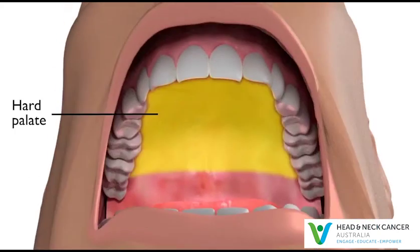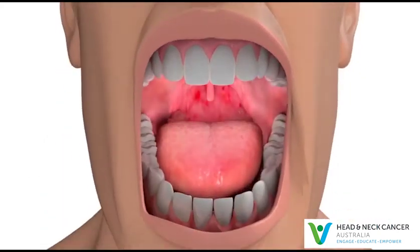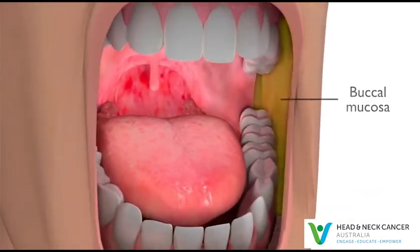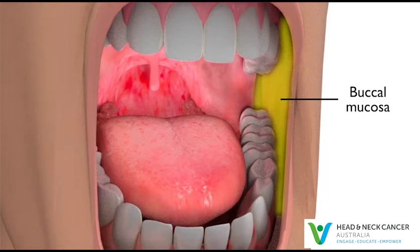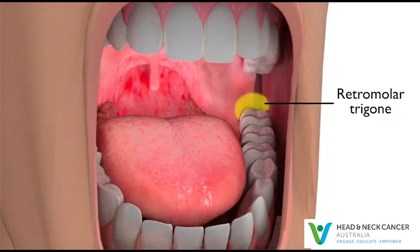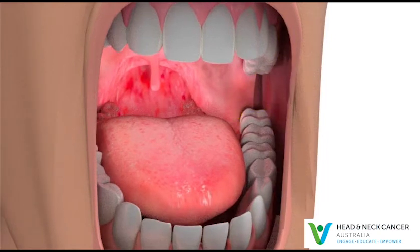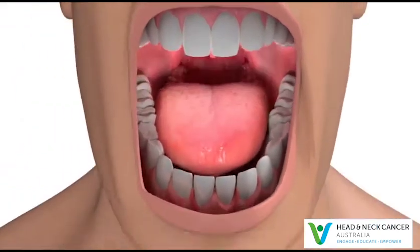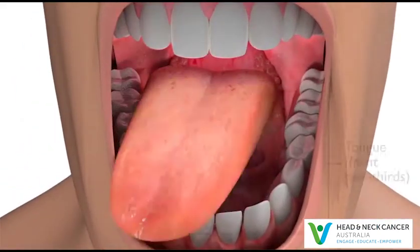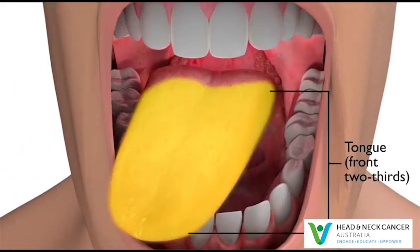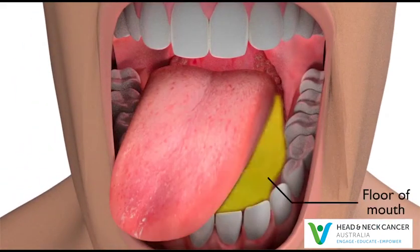These also include the hard palate, the inside of the cheeks called the buccal mucosa, the area behind the wisdom teeth called the retromolar trigone, the front two-thirds of the tongue, and the floor of mouth.